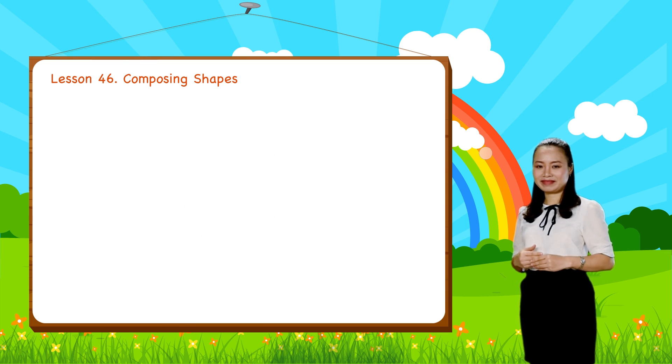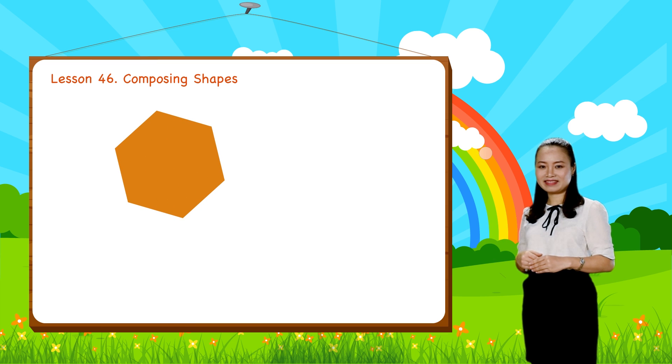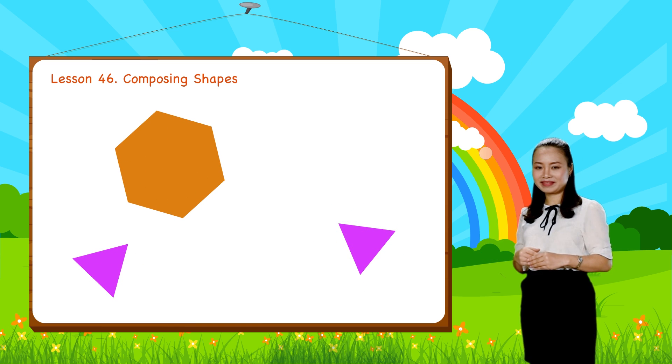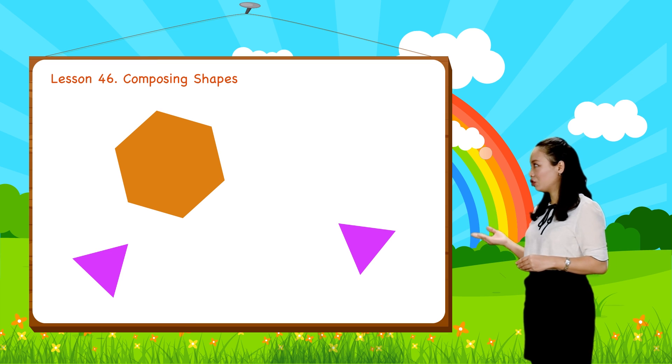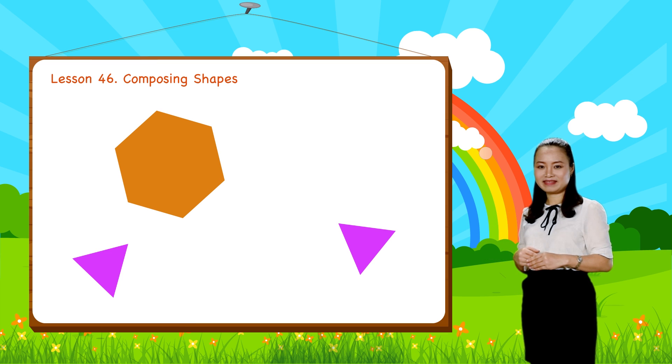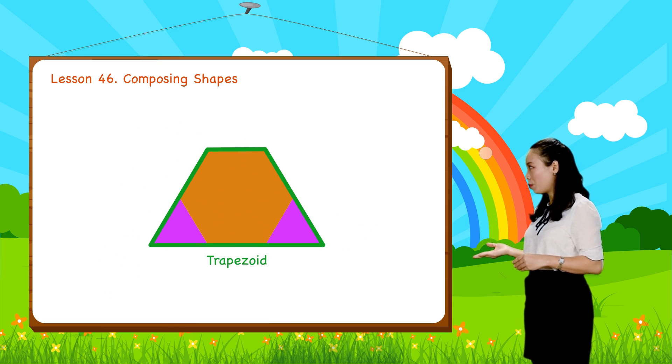Now, pick up two triangles, then try to make a trapezoid. Can you make it? Just put them together, this way.